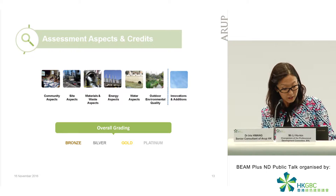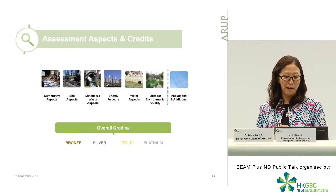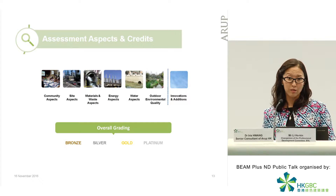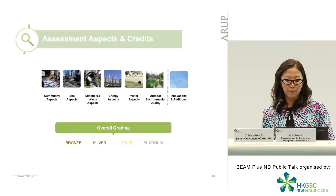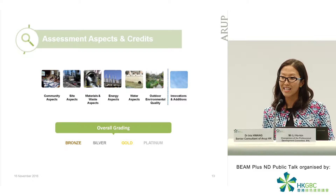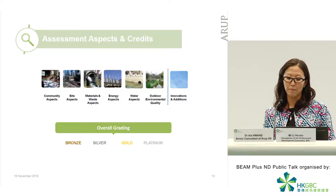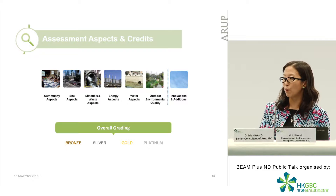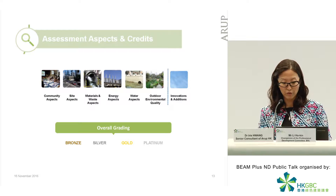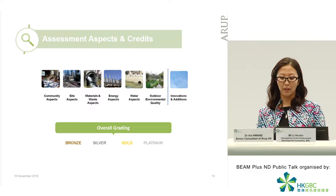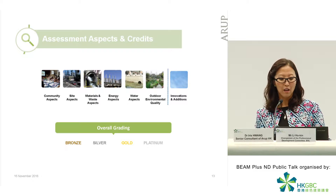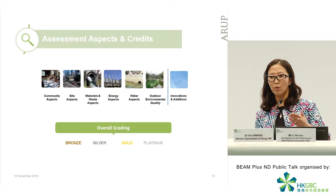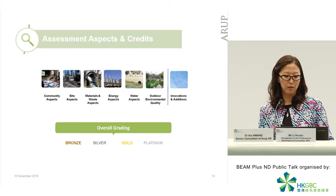There are six assessment aspects — and I just had to count having worked on it for four years. They are: Community, Site, Materials and Waste, Energy, Water, and Outdoor Environmental Quality. We're not looking at indoor environmental quality, which should be left to building owners and new buildings. We're looking at outdoor environmental quality, supplemented by innovations that any project team can propose, and performance enhancements considered on a case-by-case basis.